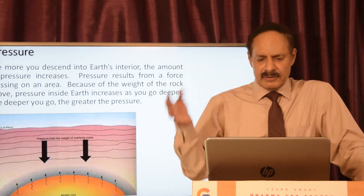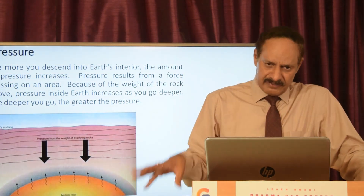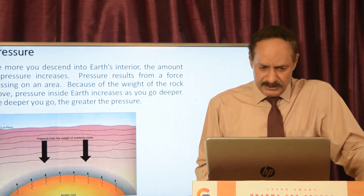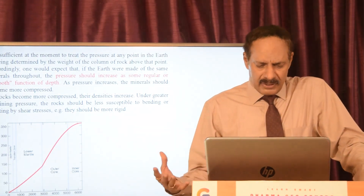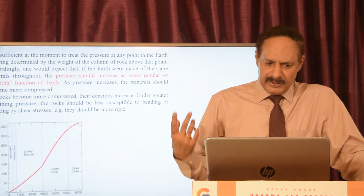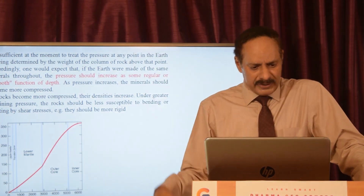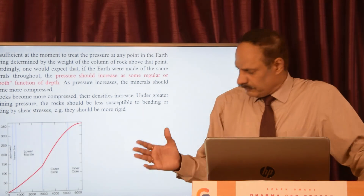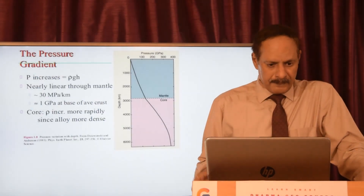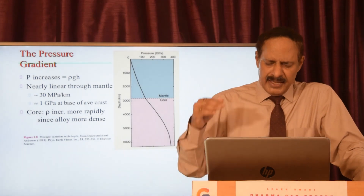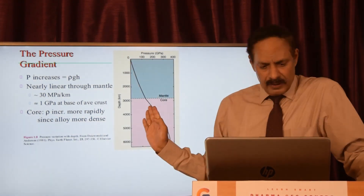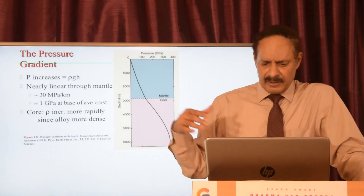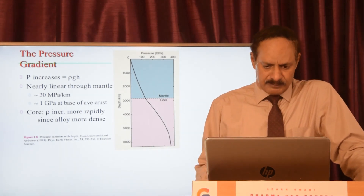Then comes pressure. The more you descend into the Earth's interior, the greater the pressure, because of the weight of the rock above. The pressure at any point in the Earth is essentially determined by the weight of the column of rock above that point. Accordingly, pressure increases as a smooth function of depth, and as you can see the pressure gradient is nearly linear through the mantle. Once it reaches the inner core it increases more rapidly because the alloy there is more dense.